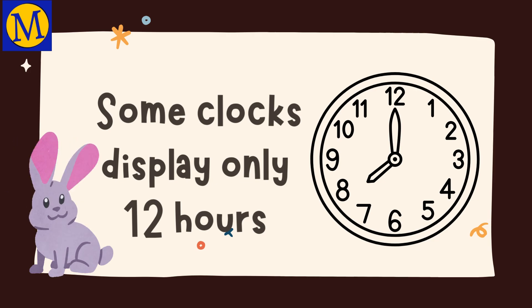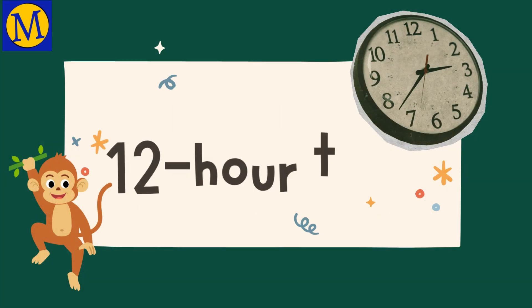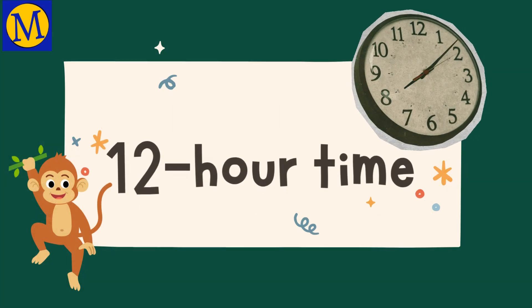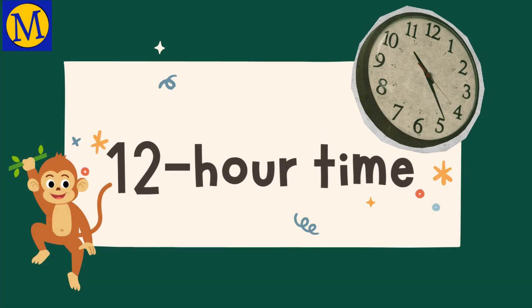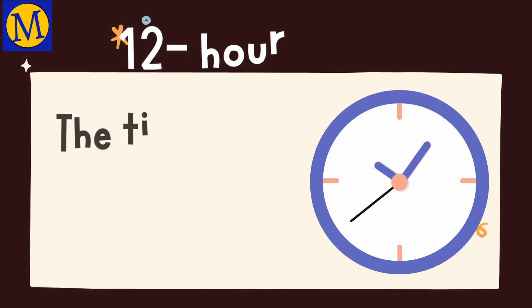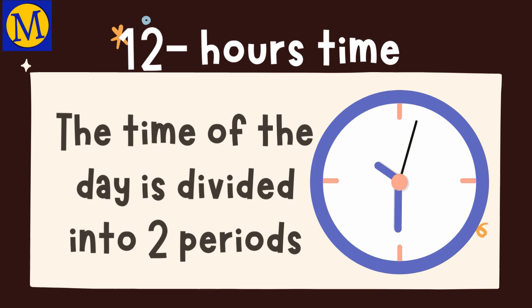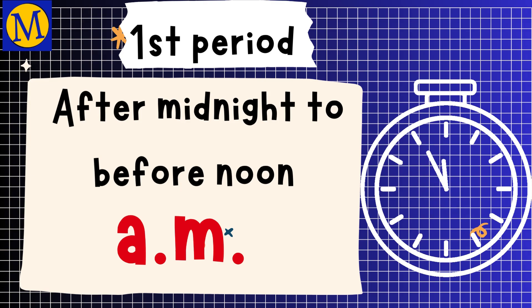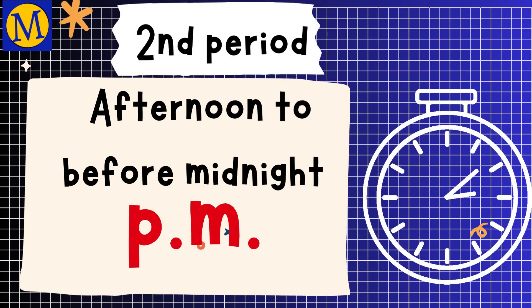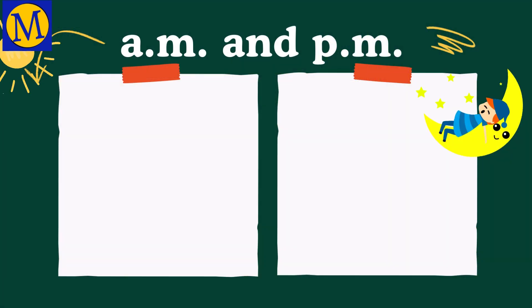First, let's have a quick look at the 12-hour clock time. In a 12-hour clock, the time of the day is divided into two periods. The first period, a.m., is from after midnight to before noon. The second period, p.m., is from afternoon to before midnight. A.m. stands for ante-meridiem and p.m. stands for post-meridiem.